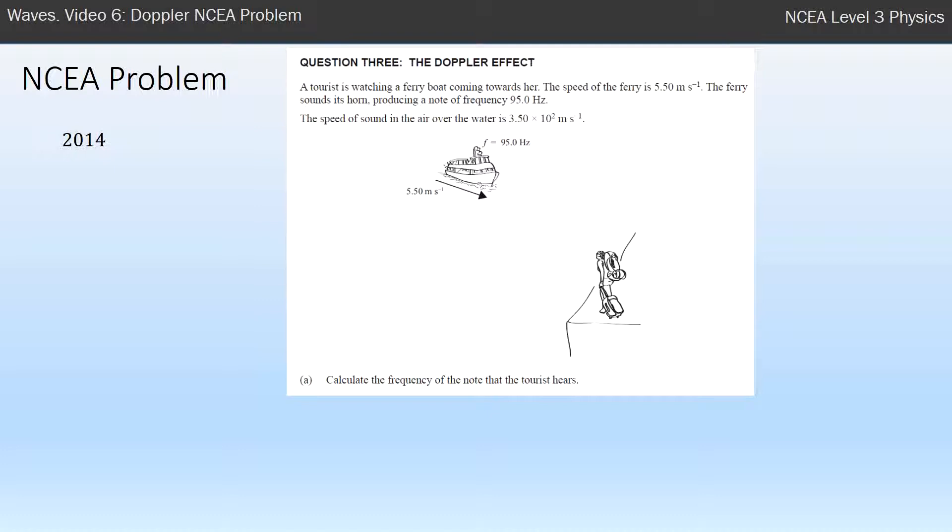So calculate the frequency of the note that the tourist hears. Always with Doppler effect formulas I draw myself a little sketch to remind myself that in front of the moving object the wave fronts are bunched together, we get a higher frequency and behind we get a lower frequency.